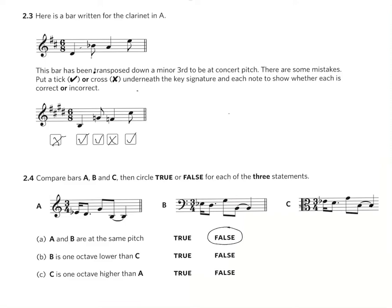So the first note E flat is the E flat just above middle C, and in B the E flat is the E flat in the octave below middle C. So statement B is correct, so circle true.